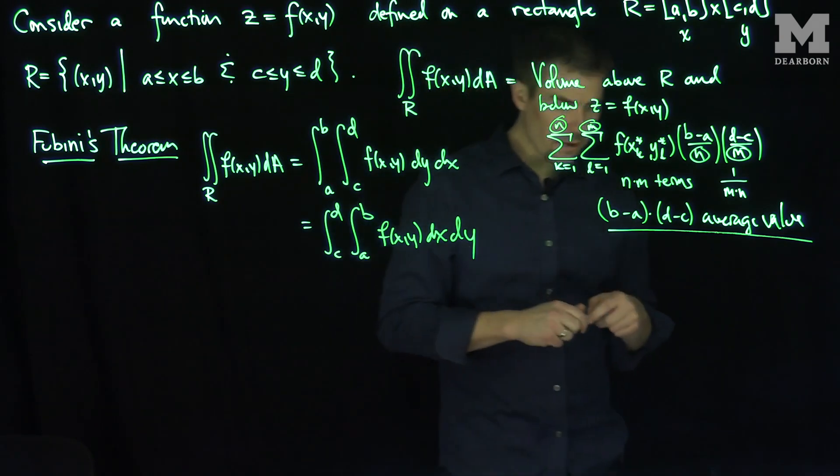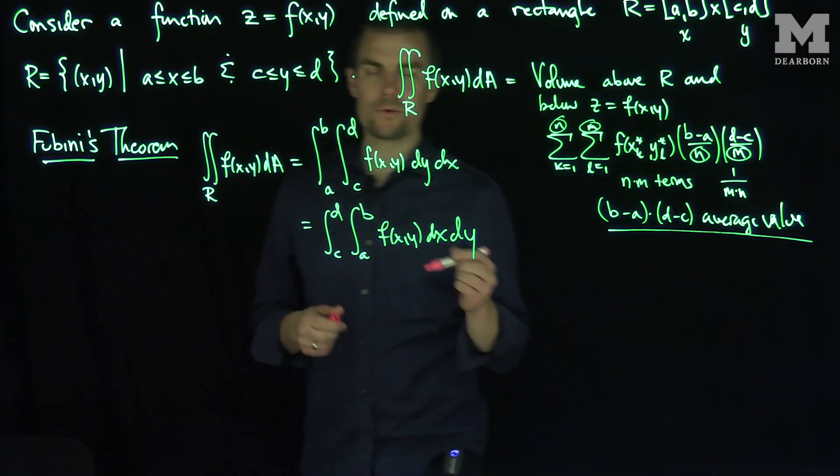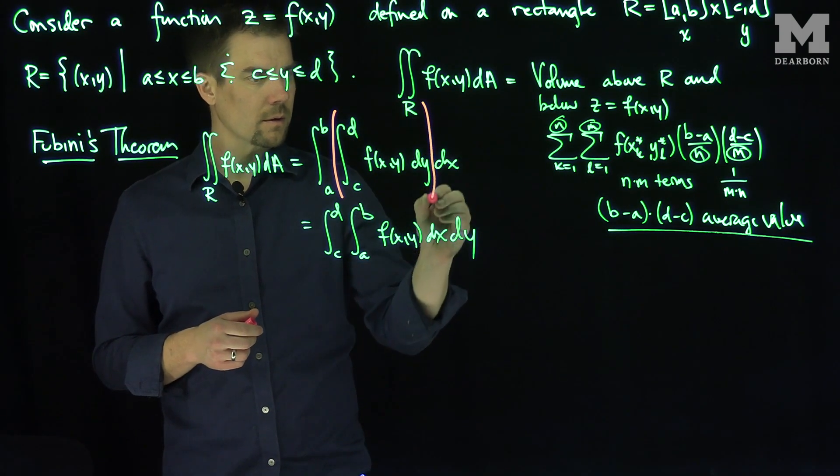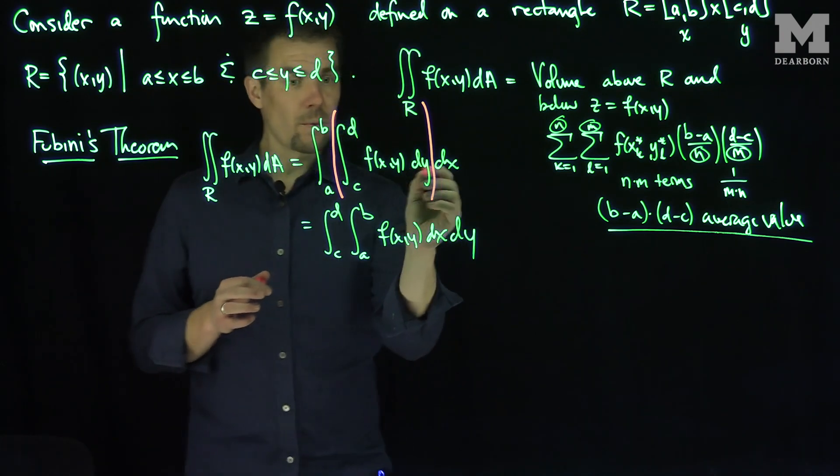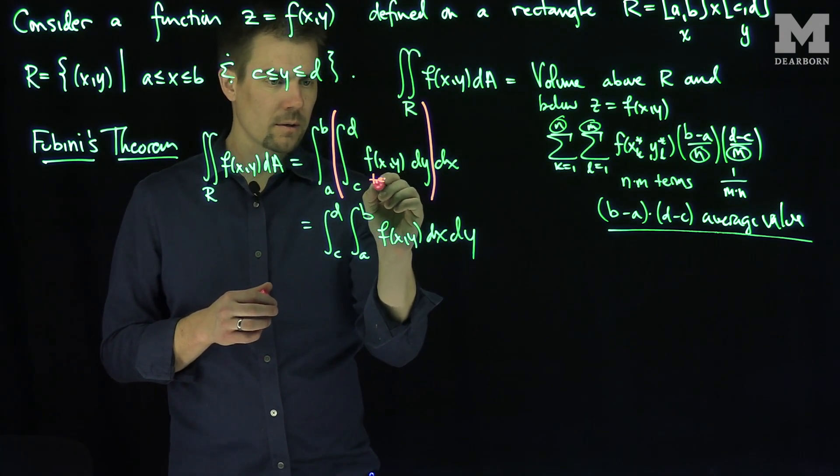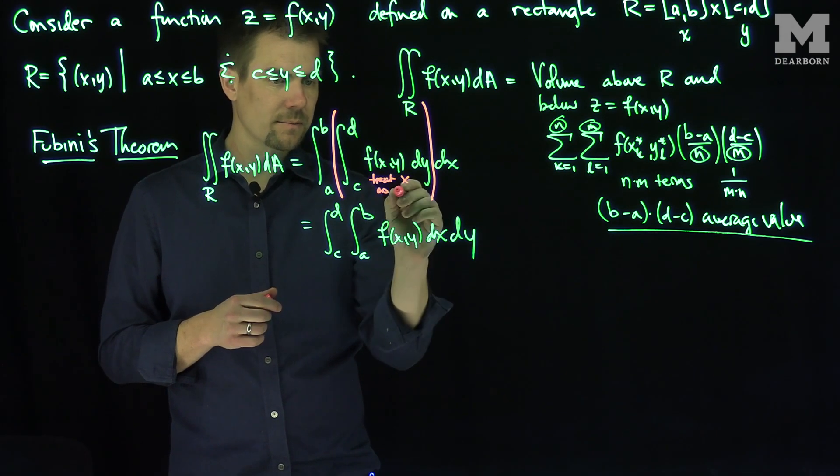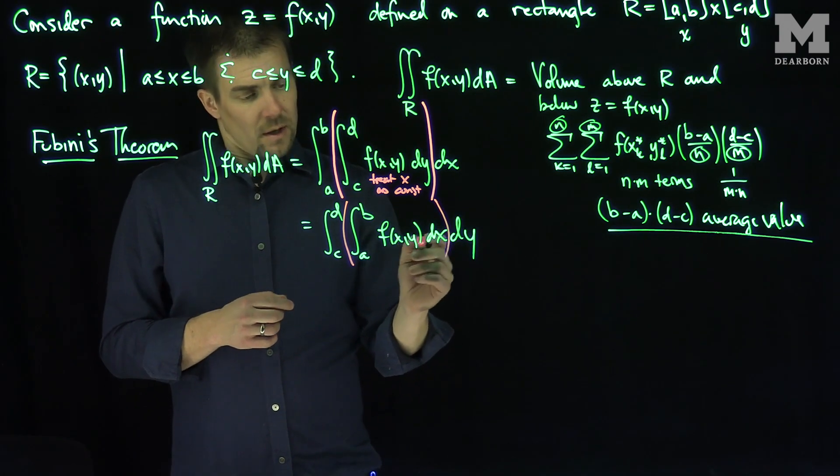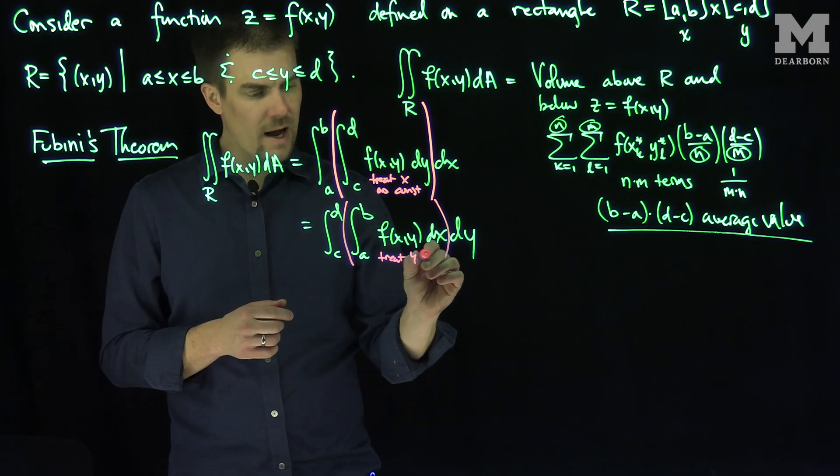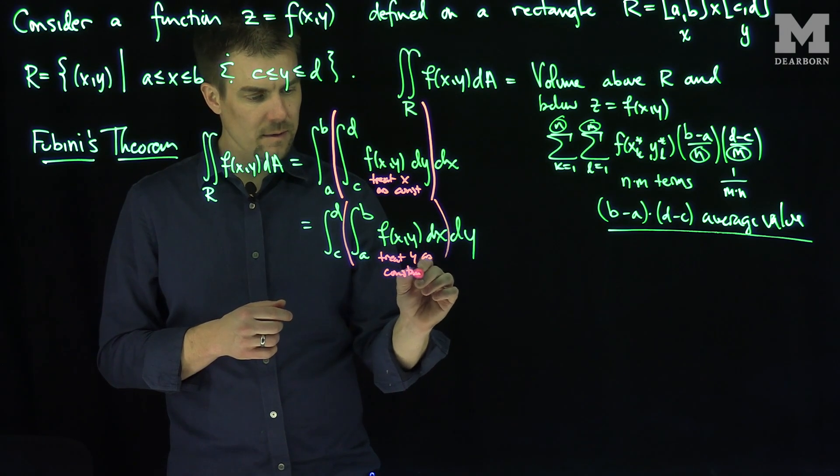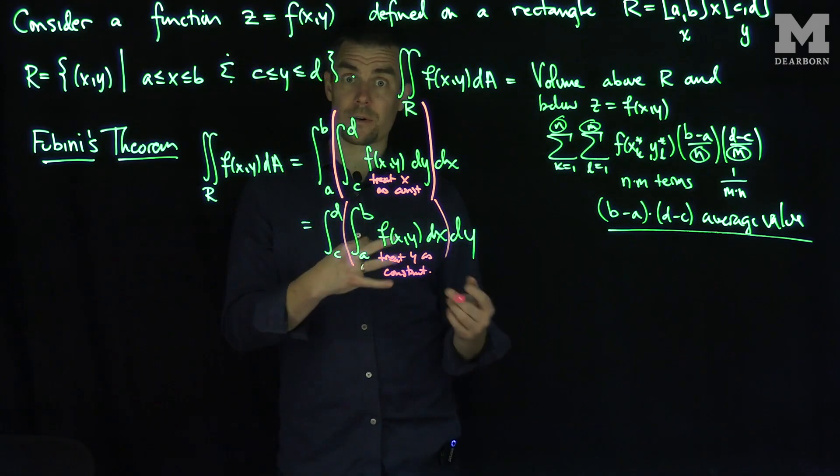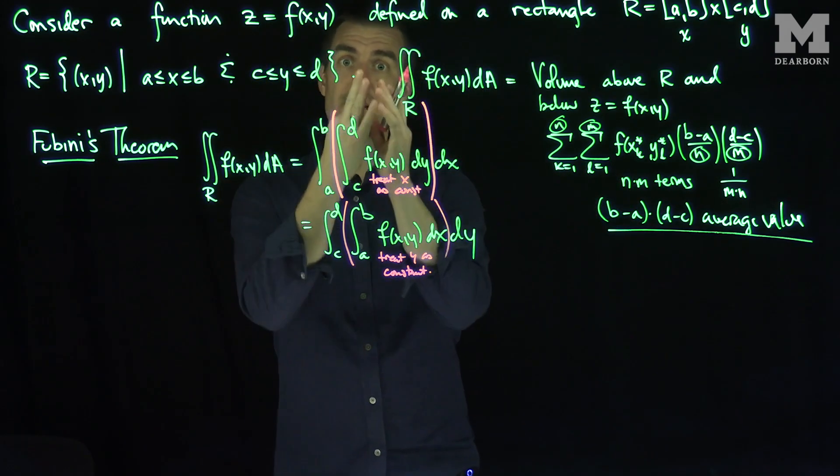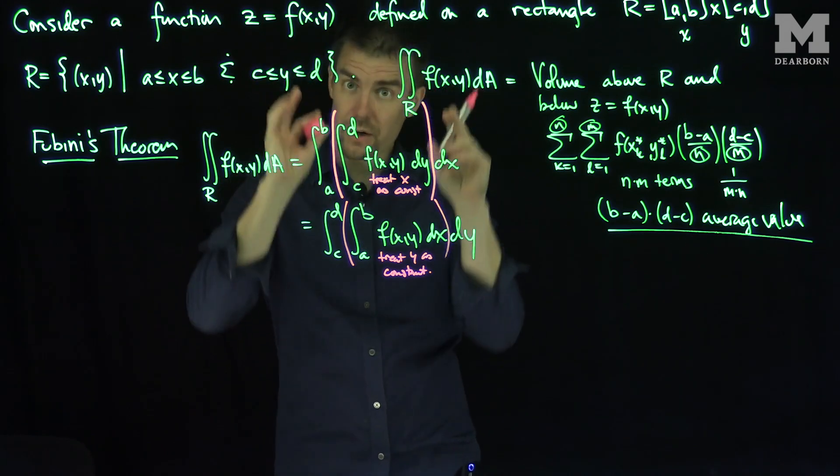And when you do either of these iterated integrals, you iterate these integrals as follows. What you do is you first do this innermost integral. And when you do this innermost integral, when you're doing a dy integral, you would treat x as a constant. If you do it this way, you would do an x integral first, and then you would treat y as a constant. So you do these iterated integrals, and that reduces the calculation from this abstract Riemann sum to two integrals, or two partial integrals, or two iterated integrals.